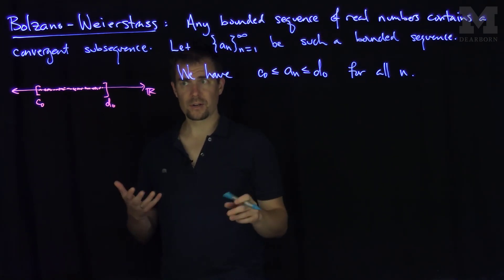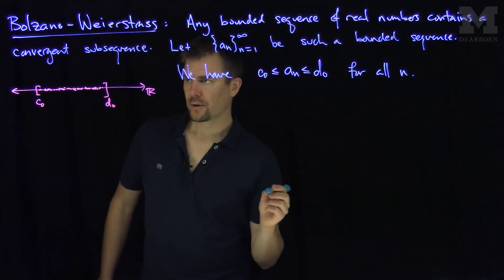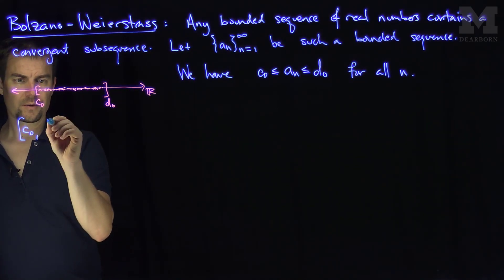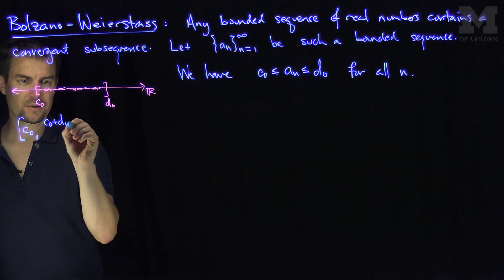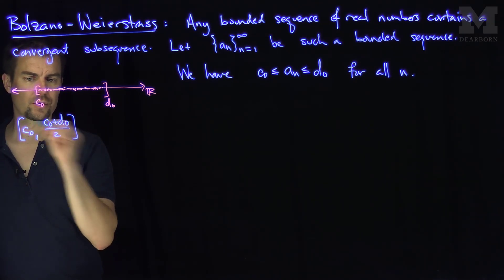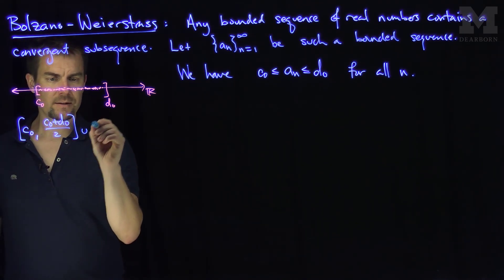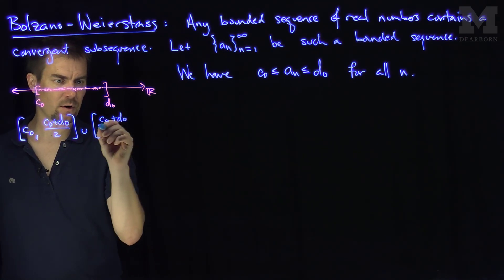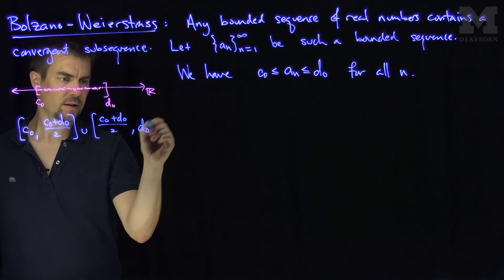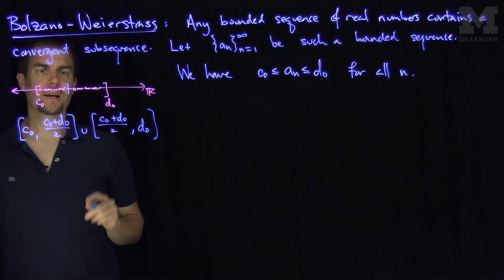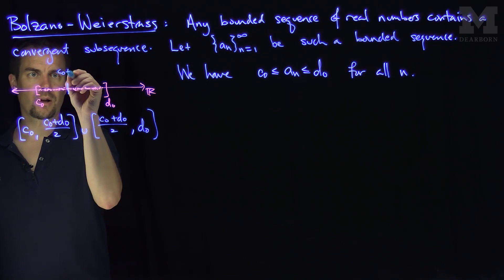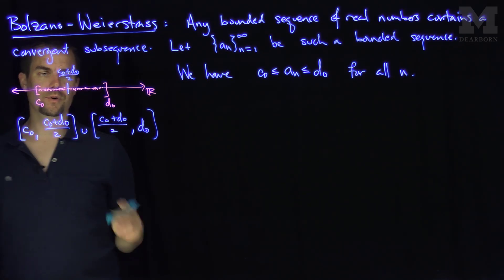Now, what we'll do is we'll cut this interval into two parts. So we'll look at the closed interval c0 to c0 plus d0 over 2, and the union c0 plus d0 over 2 to d0. In other words, we split this interval into two parts. That's the midpoint, c0 plus d0 over 2.